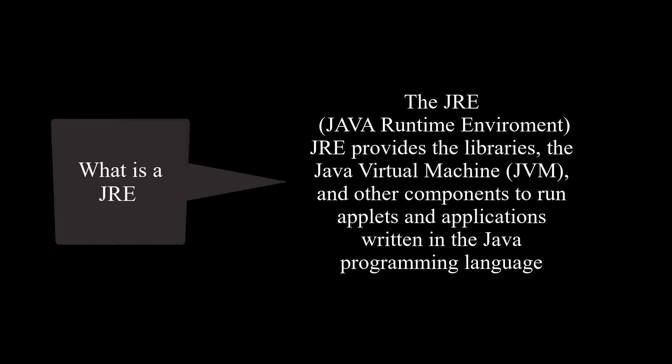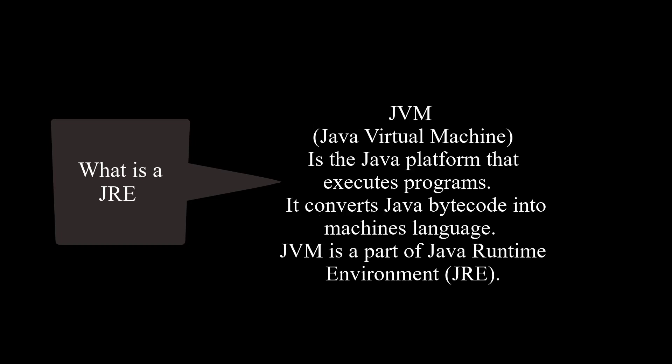The Java Runtime Environment will provide the libraries, the Java Virtual Machine, and other components to run applets and applications written in the Java programming language. The Java Virtual Machine, which is part of the Java Runtime Environment, is the platform that executes programs. In other words, it's a platform that converts Java byte codes into machine language.